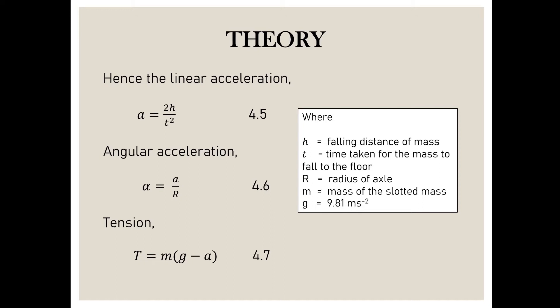Where h is the falling distance of mass, t is the time taken for the mass to fall to the floor, R is the radius of axle, m is the mass of slotted mass, and g is equal to 9.81 meter per second squared.